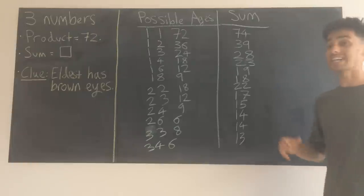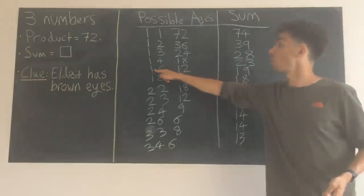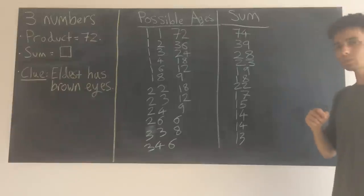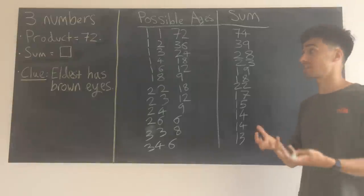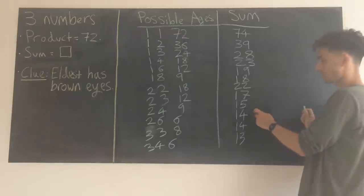If the house number was, say, 19, the only way to get 19 would be 1, 6 and 12. There's just one house number which doesn't give us an immediate answer, and that's 14.